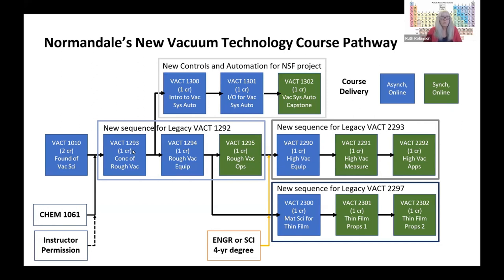Starting with 1293, you become more equipment or process-oriented than you did in VacTech 1010. In fact, you will operate remote vacuum equipment yourself in real time from your computer.